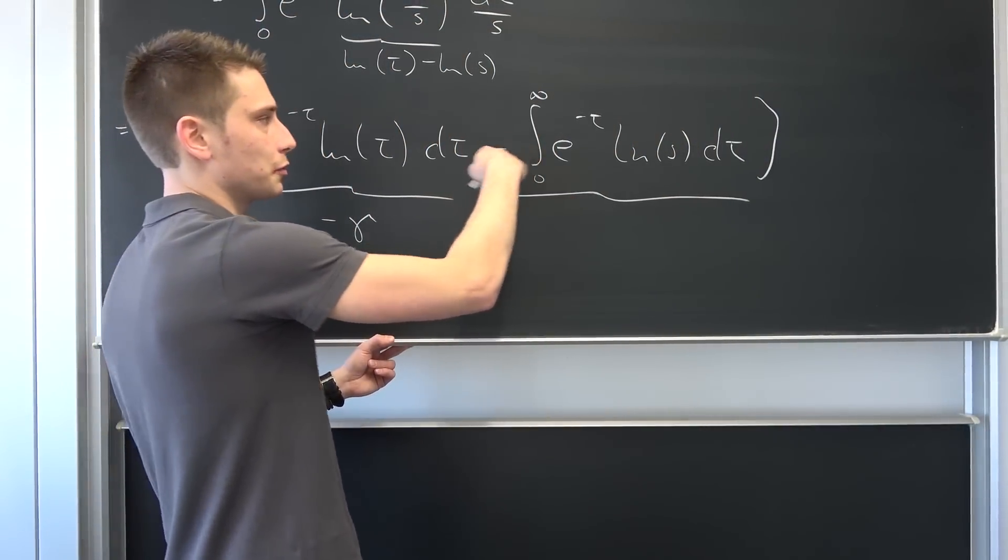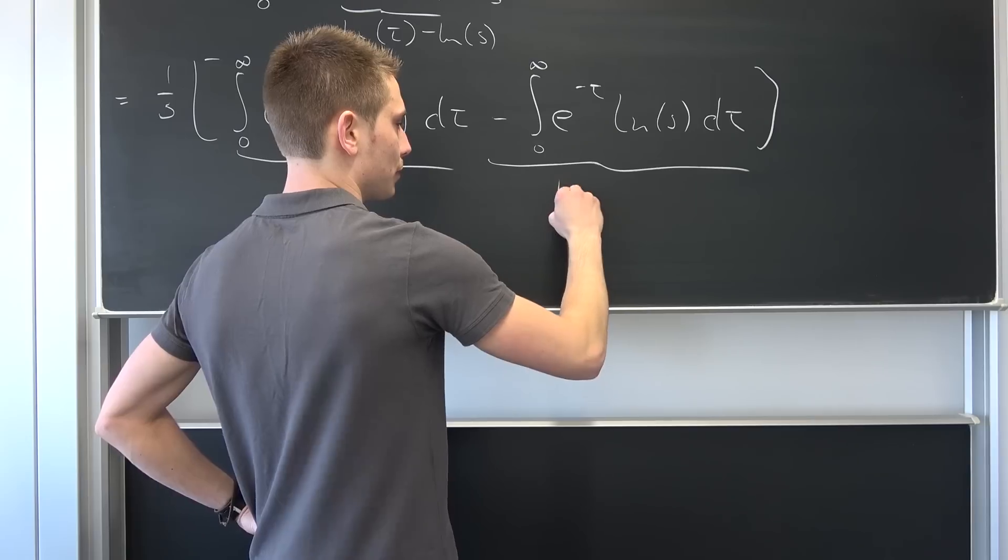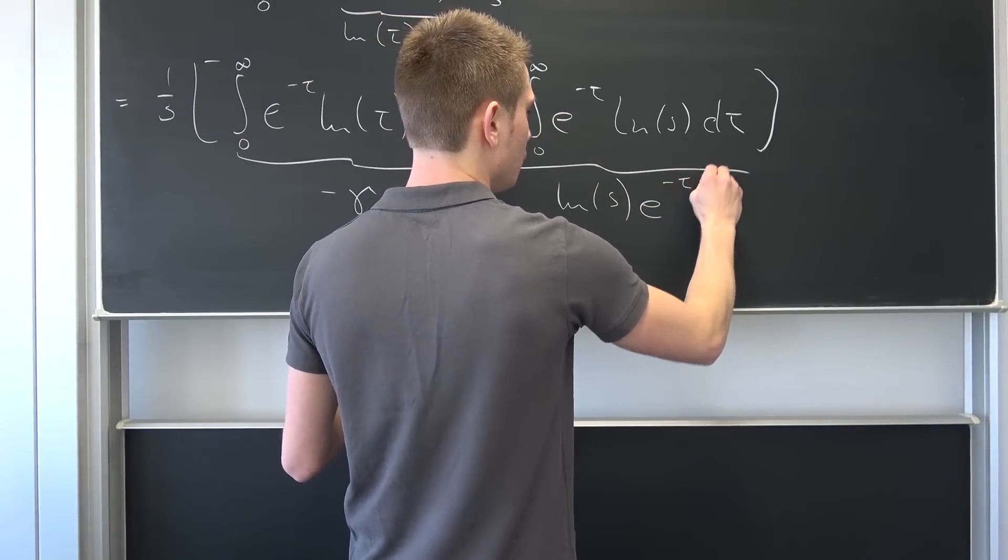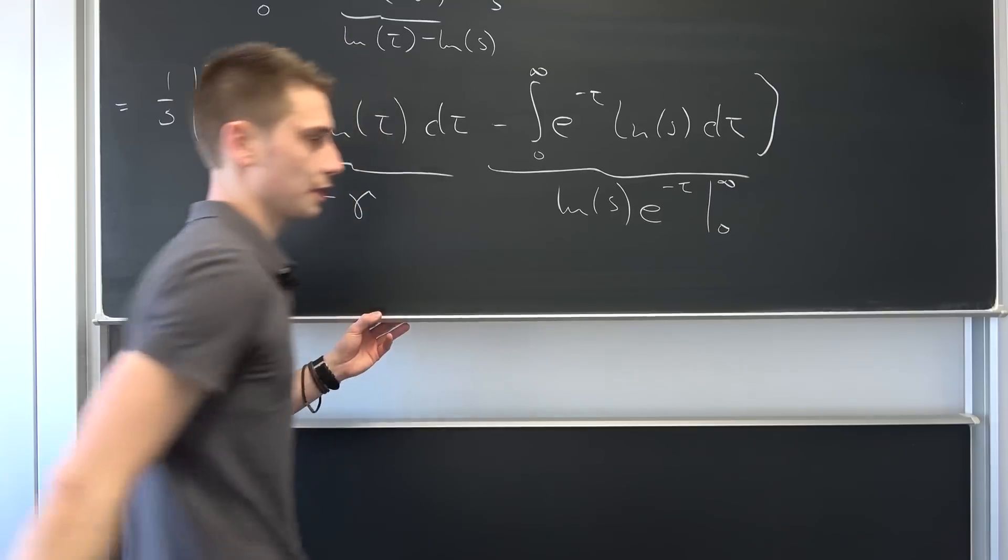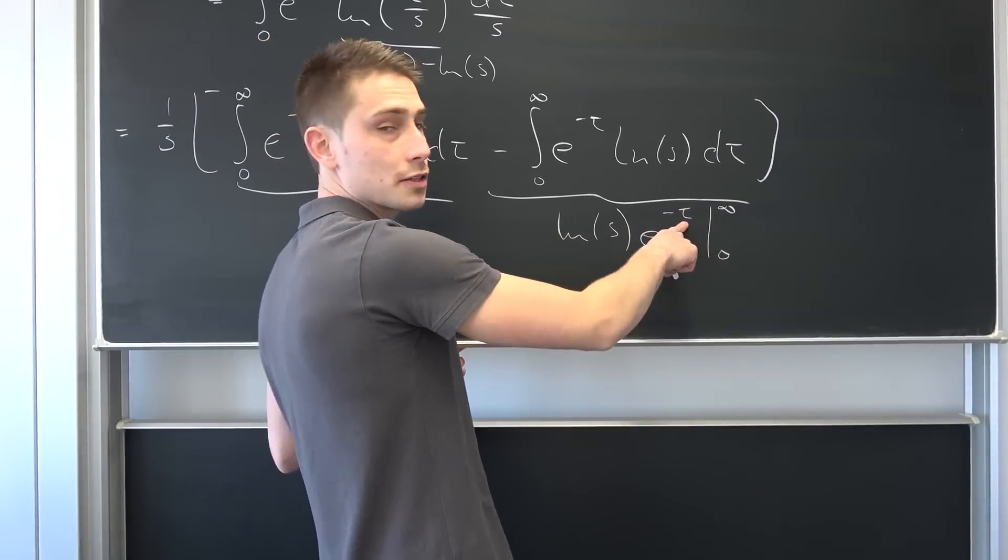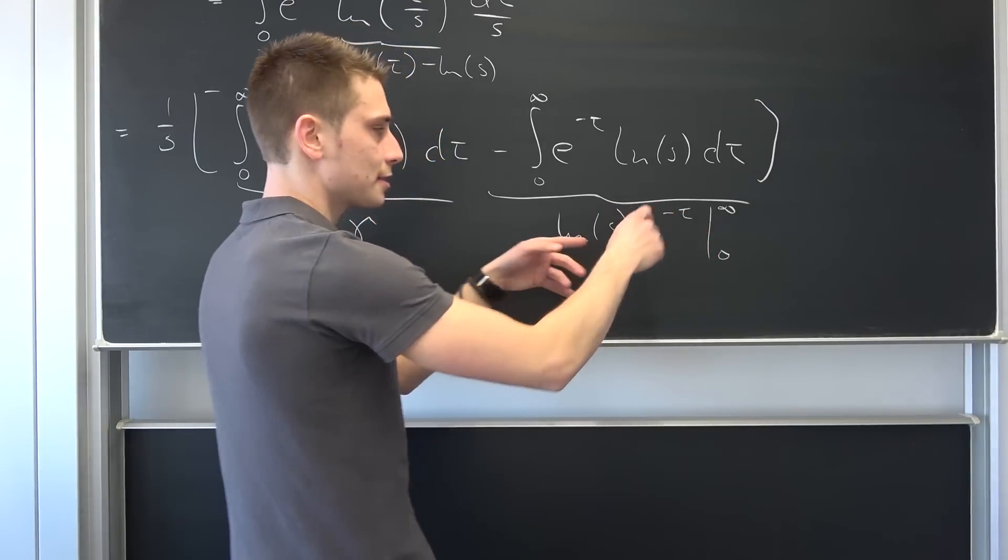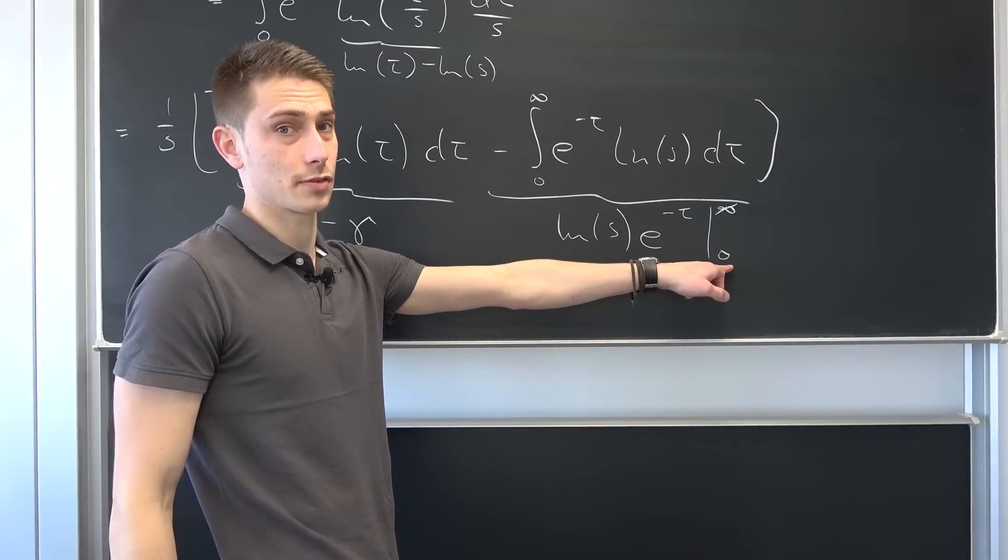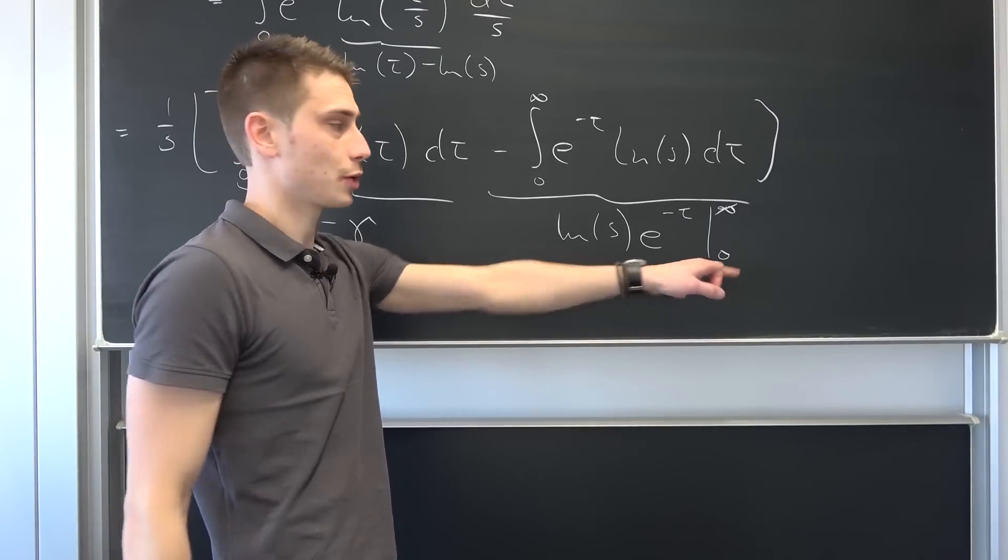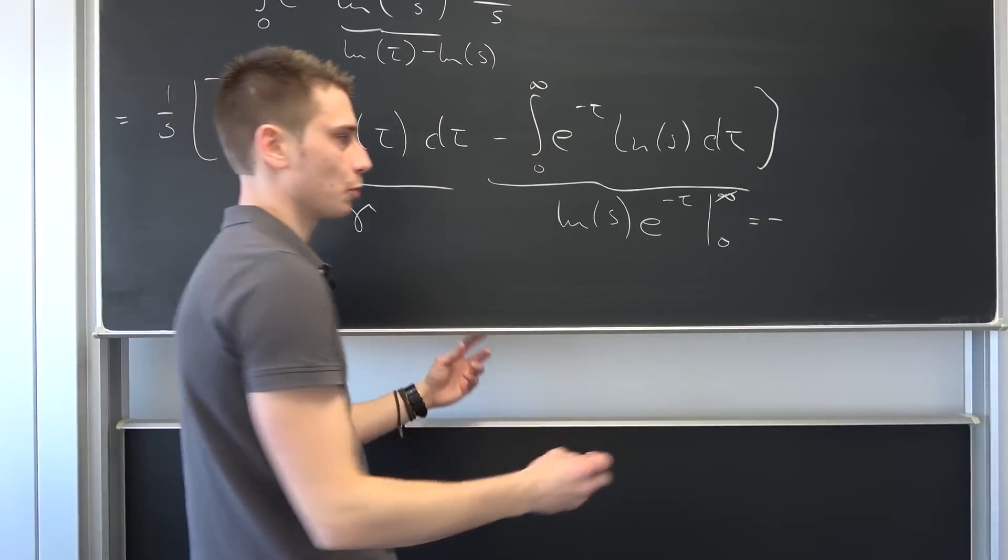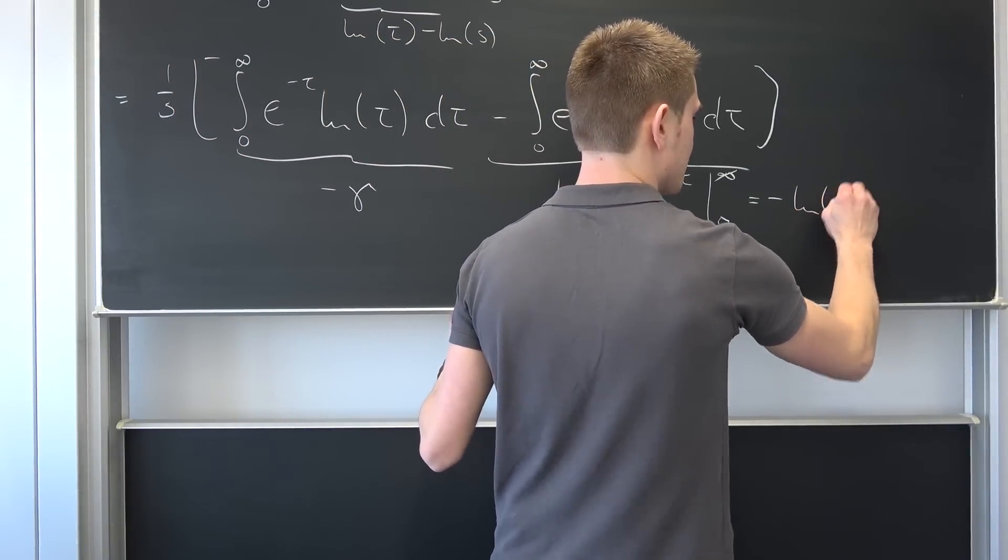If we get rid of this negative sign by integration, this is nothing but natural log of s times e to negative tau from zero to infinity. If we plug infinity into here, so let tau approach infinity in the limit, it's going to be one over infinity, that's just going to vanish in the limit. Then we are going to get negative sign by the second part of integration. This is negative e to the zero power is nothing but one, so negative natural log of s.